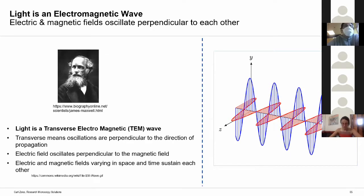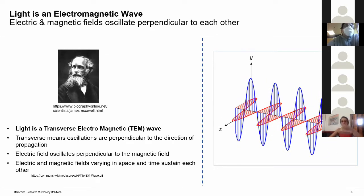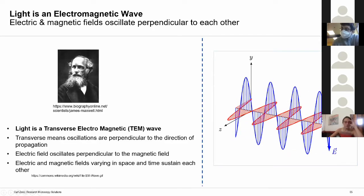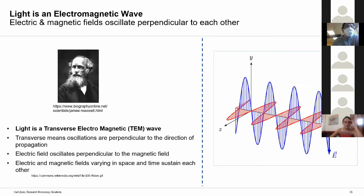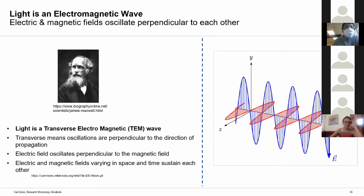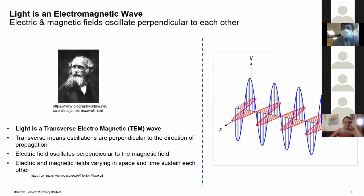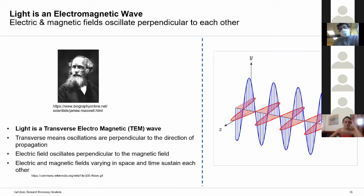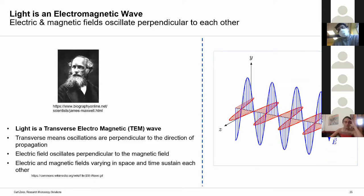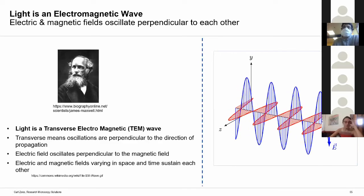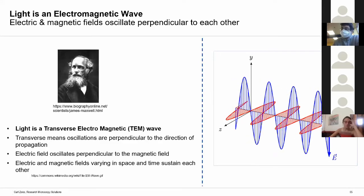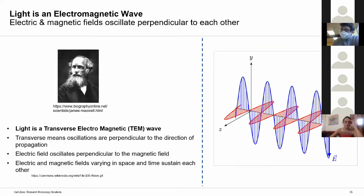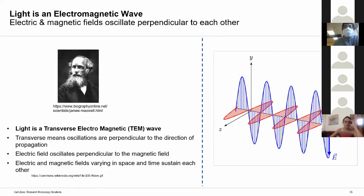James Maxwell described light as a transverse electromagnetic wave. There is an oscillating electric field which gives rise to an oscillating magnetic field; they sustain each other, and no medium is needed for light to propagate. Light propagates in a plane perpendicular to both the electric and magnetic fields. To understand this more simply, we can look at water waves, which are a simpler transverse wave.